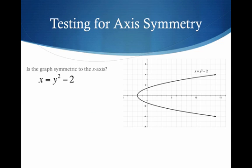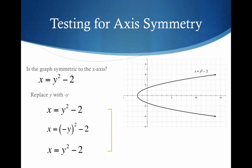Is this graph symmetric to the x-axis? Meaning, if I were to fold on the x-axis, do I get my function on top of itself? Let's do the algebra — we're going to substitute y with negative y. I plug in negative y for y, I square it, it goes away, and as you can see I get back to my original function. Yes, this — and I should not say function, it's not a function, this would be a relation — has x-axis symmetry.